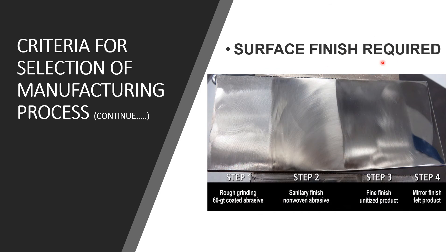This slide shows a wide plate on which different processes with different abrasive materials are applied. You can easily distinguish the difference between all four stages. A product requires a large amount of work to achieve a mirror surface. If we want to see our face on a product's metallic surface, we need to pay more for that level of finish.